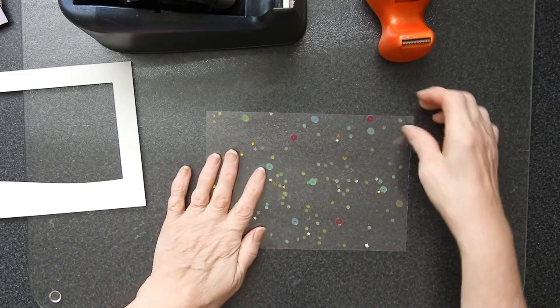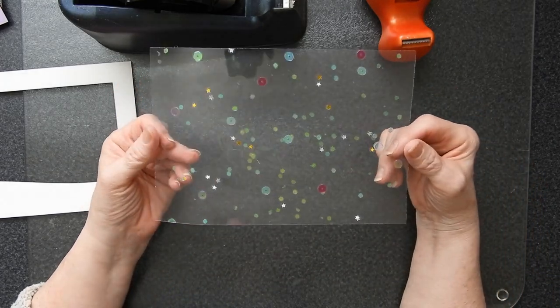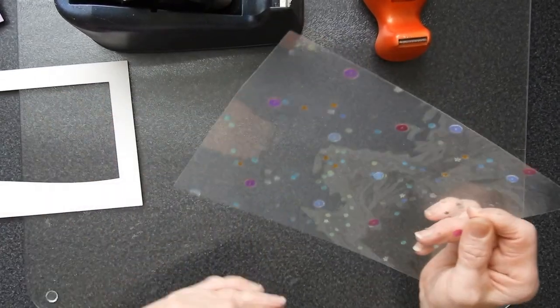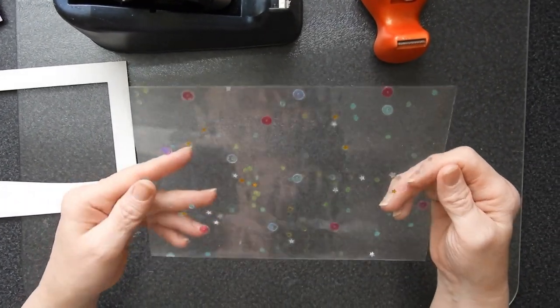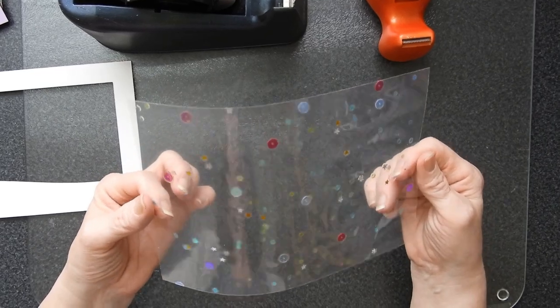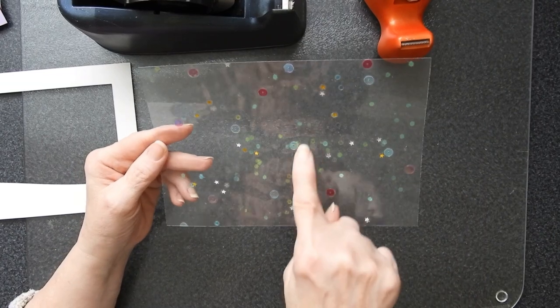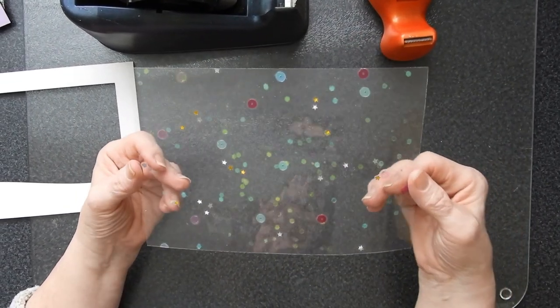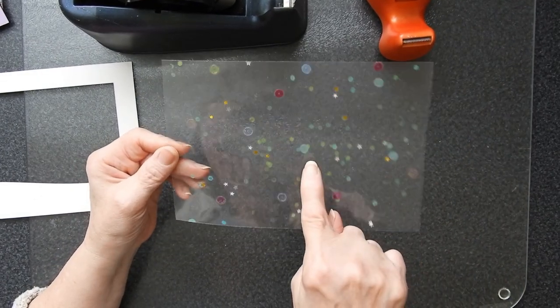I'm starting off with this which is basically a laminate folder and all I've done is put some various sparkly bits in between the two pieces and put it through the hot laminator. Now you want to make sure that your laminator is well and truly up to heat when doing this because otherwise you'll get something which looks a bit like condensation between the sheets.